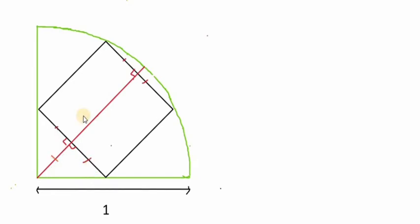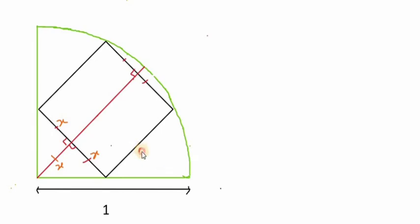Now let us consider the length of the square as x. Then this side will also be x, and this is also x. We can see that the total length of the square's side is 2x, so here I write 2x.